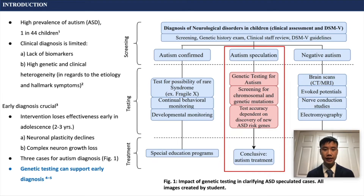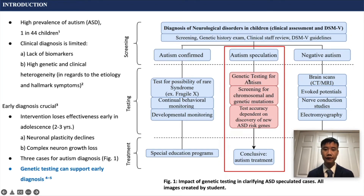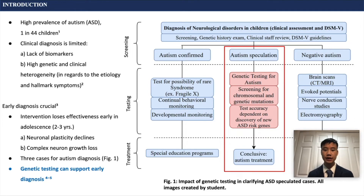There are three cases for autism diagnosis. The first is when autism is confirmed, which would then follow a behavioral and developmental monitoring approach. For negative autism cases, there are a variety of other tests for neurological conditions. However, for autism speculation cases, it is dependent on genetic testing through screening of chromosomal and genetic mutations. However, the accuracy of genetic testing is highly dependent on discovering new autism-rich genes.